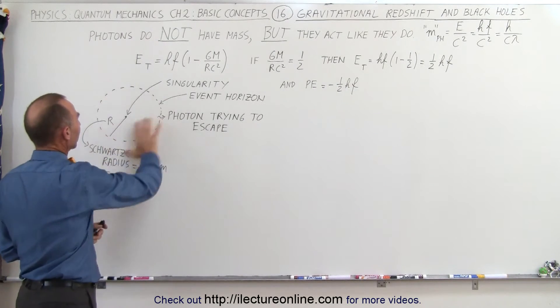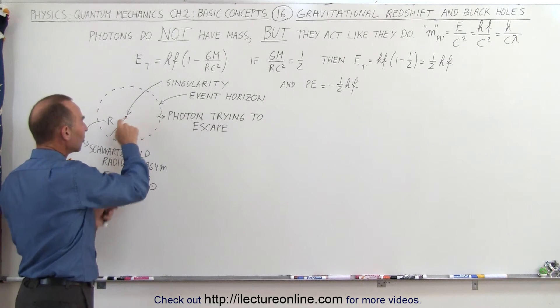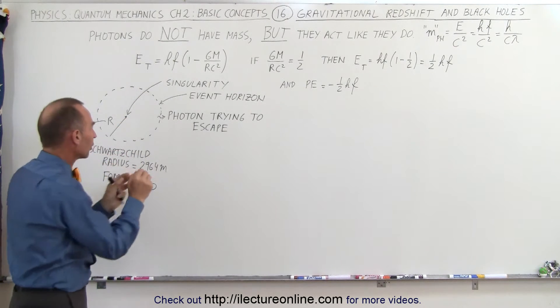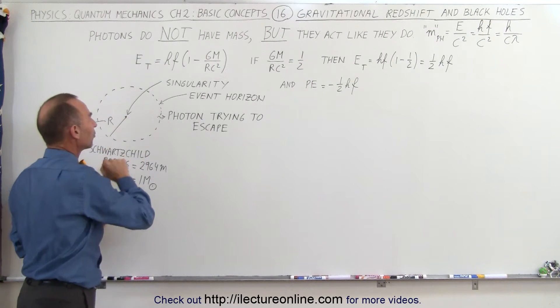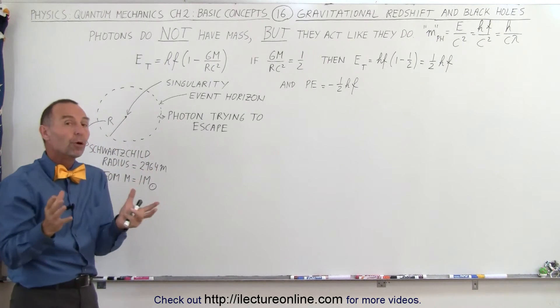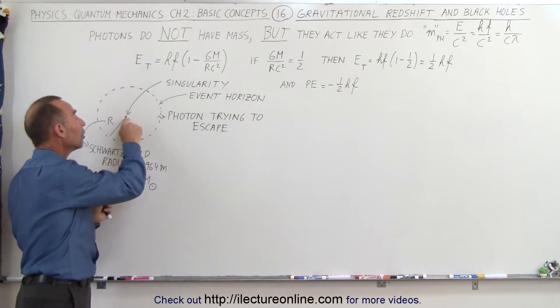Now here we have a schematic of a black hole. All the mass is at the very center of the black hole, a tiny singularity with all the mass present.